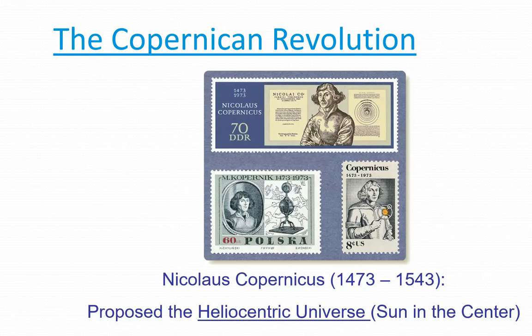Then Ptolemy said that can't be right, because we have retrograde motion. The planets normally appear to move just a little bit east every night compared to the celestial sphere, except there are periods when they have retrograde or backward motion. He said that can't be explained with things just doing circles around the Earth, so he came up with the idea of epicycles — a wheel on the sphere — so that sometimes the planet's motion on the wheel comes back, producing retrograde motion.